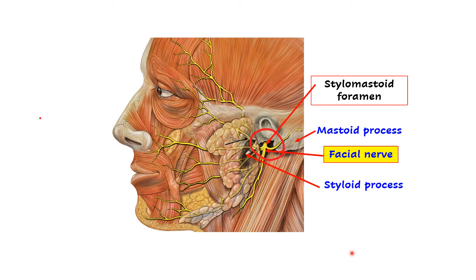The facial nerve may get compressed near the stylomastoid foramen. The styloid process is anterior and the mastoid process is posterior — both are parts of the temporal bone — and the foramen between them is the stylomastoid foramen. The facial nerve leaves the cranial cavity through this foramen, and just at this site or slightly above it, the nerve may get compressed due to some infection. The facial nerve then enters the parotid gland and gives five terminal branches supplying the muscles of facial expression.